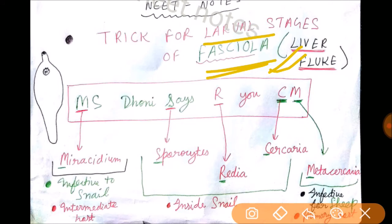So let's see: MS Dhoni says R U C M. M for Miracidium, S for Sporocyst, R for Redia, C for Cercaria, M for Metacercaria. This is the trick that you can follow to remember the sequence.